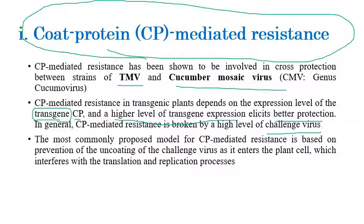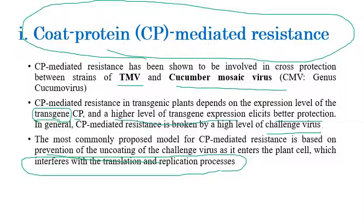Coat protein-mediated resistance can be broken by high levels of challenge inoculum from plant viruses. The most commonly proposed model for coat protein-mediated resistance is based on prevention of uncoating: the coat protein prevents the incoming virus from uncoating, which interferes with translation and replication of the virus.